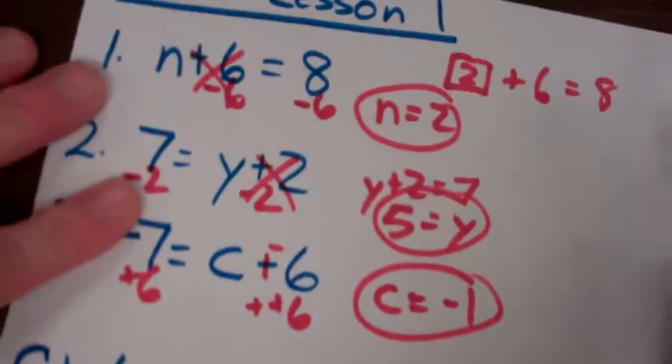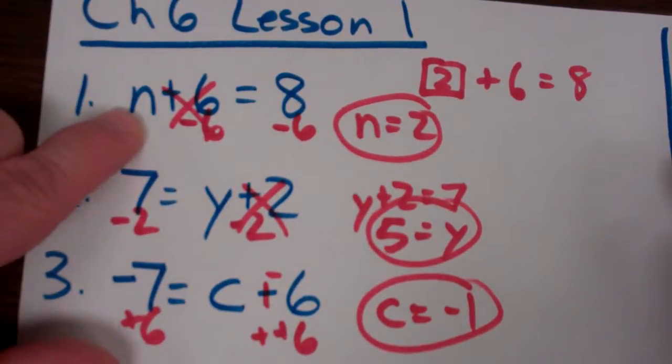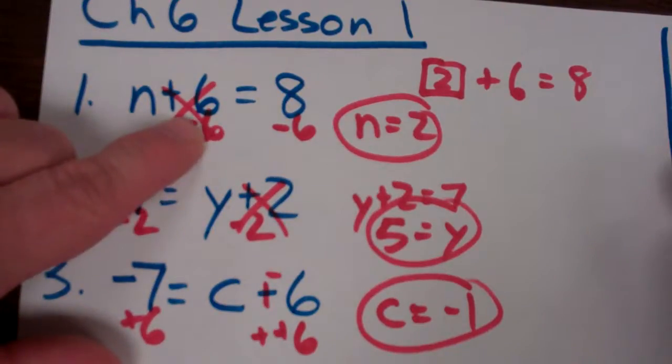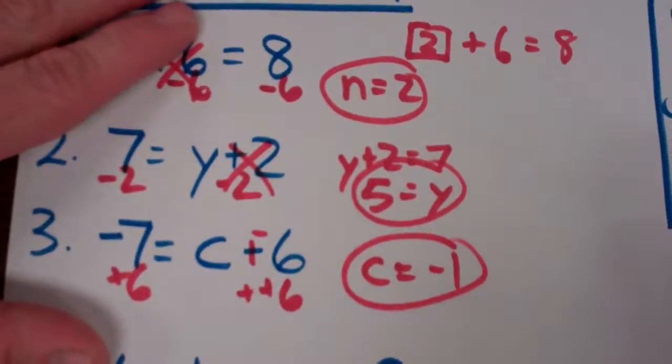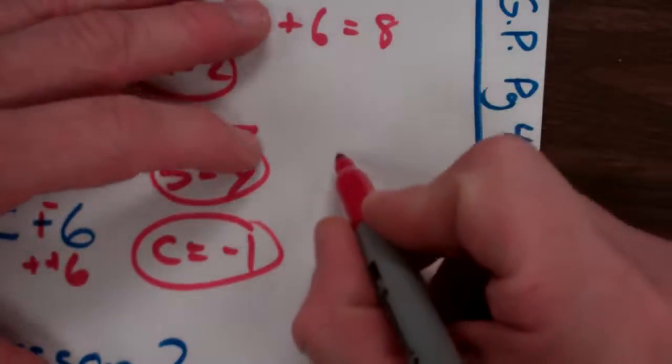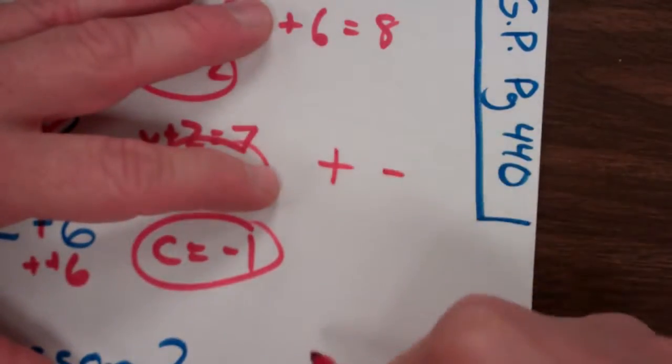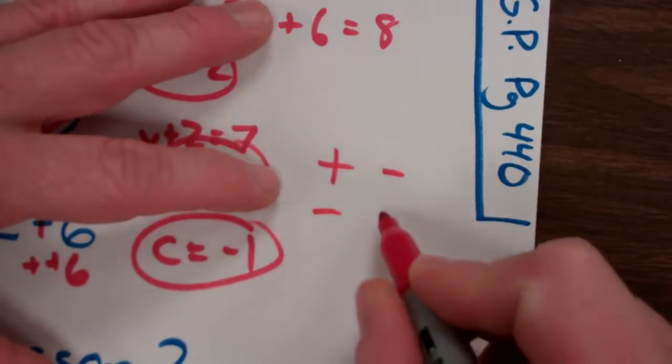So once again, one step equation. You find out what the variable is and what they did to it. And then you undo it by doing the opposite, the opposite operation. So let me go over that real quickly. What undoes addition? Subtraction. What undoes subtraction? Addition.